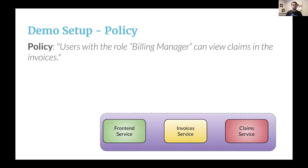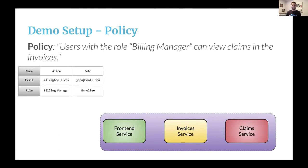The policy we want to demo says that users with the role Billing Manager can view claims in the invoices. To demo this policy, we have a couple of users: Alice, who is a Billing Manager, and John, who is an enrollee. We'll see later how this information is decoded from the JWTs.